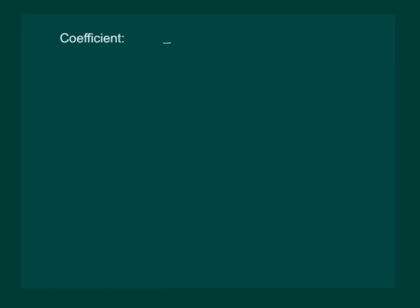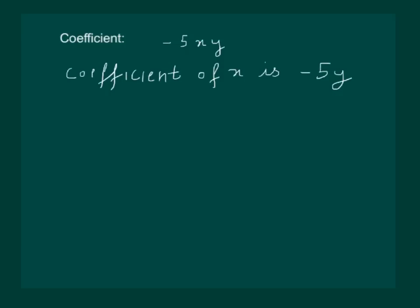Consider the term -5xy. The coefficient of x is -5y. The coefficient of y is -5x. And the coefficient of xy is -5.